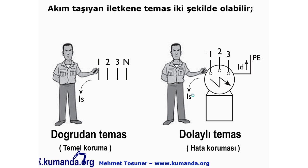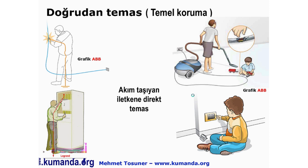Önce bazı tanımlarla başlayayım. Akım taşıyan iletkene temas iki şekilde olabilir: ya doğrudan temas ya da dolaylı temas şeklinde. Bundan sonraki literatürde doğrudan temas karşımıza temel koruma, dolaylı temas ise hata koruması şeklinde gelecek. Doğrudan temas — temel koruma — akım taşıyan iletkene direkt temas şeklinde olur; bir pano içerisinde ya da yalıtkanı gitmiş olan bir iletkene veya baraya direkt temas olabilir.